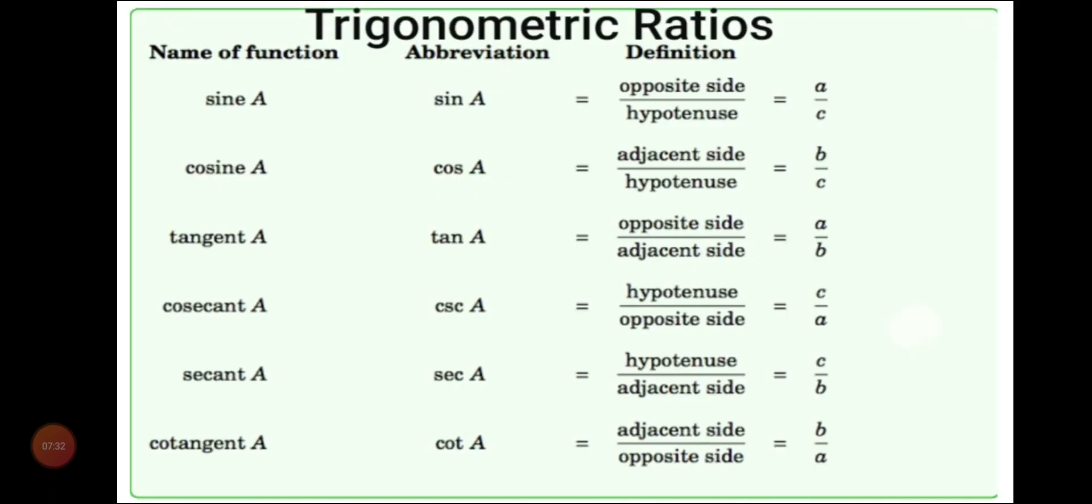Then, dear students, in this chapter, we will study about the trigonometric ratios. Here, you can see in the table that we have six trigonometric ratios, which are written under the name of function. First is sine A, whose abbreviation is S-I-N, and A is the angle sine A. Then cosine, this is the full form of cos, tangent, tan A, cosecant A is denoted by C-S-C or C-O-S-E-C. Then, secant is denoted by sec A, cotangent is denoted by cot A. So, these are the six trigonometric ratios, which we will study and which will play an important role in trigonometry.